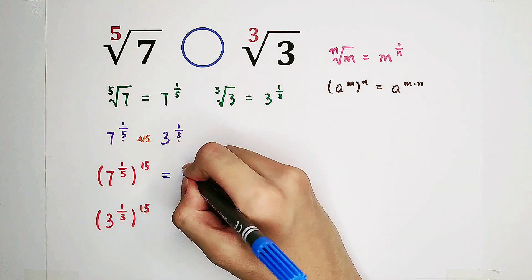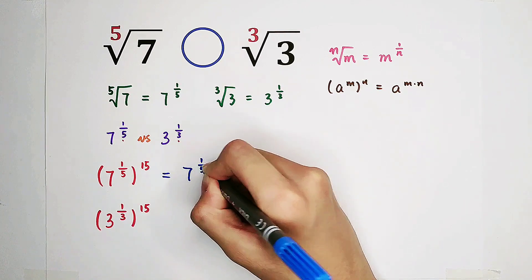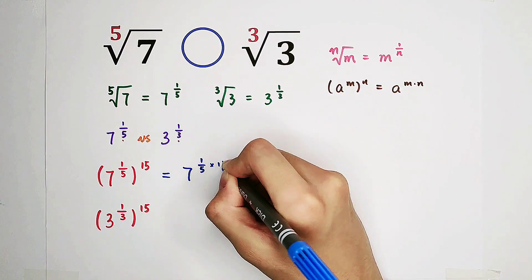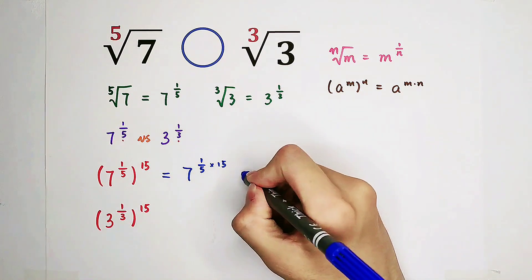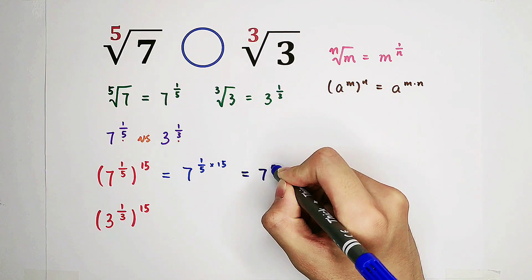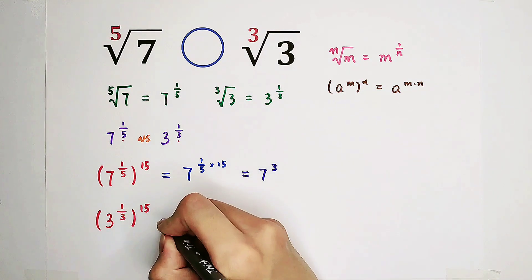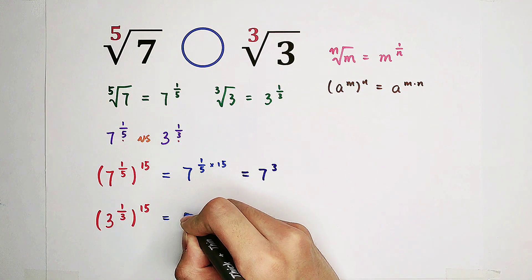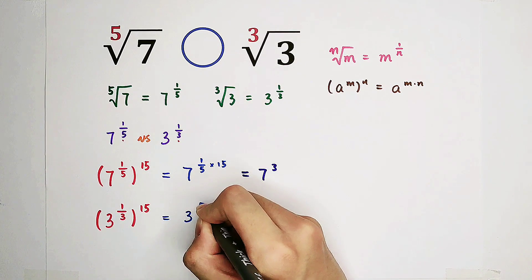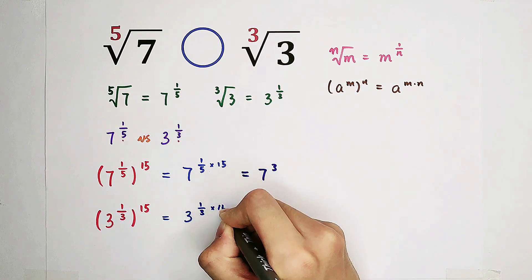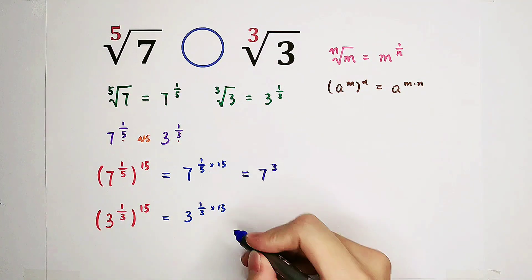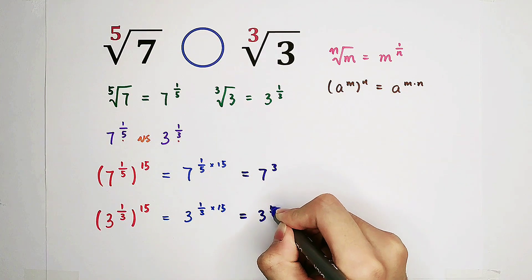So that means this is just 7 to the power of 1 fifth times 15. So the result is just 7 to the power of 3. The same thing for here. It is 3 to the power of 1 third times 15 equals 3 to the power of 5.